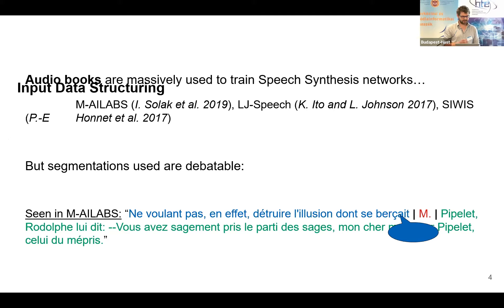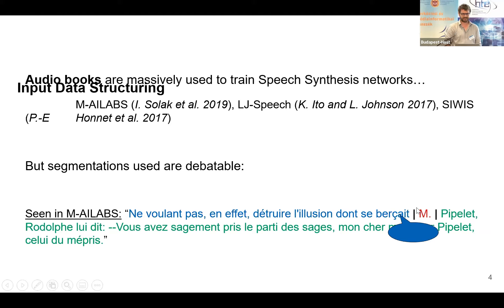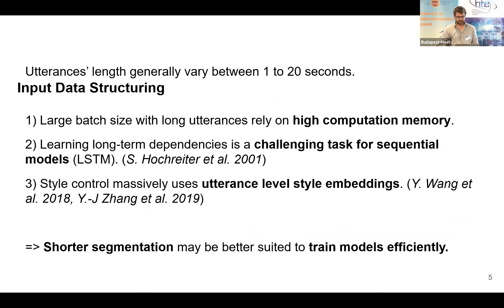None of these boundaries match an actual silence in the speech. Another issue with these corpora is the duration of utterances — long utterances may not be the best approach to train TTS models. There are three reasons: first, high computation memory and power is needed for large batch sizes with long utterances; second, TACOTRON2 uses recurrent units like LSTM in its encoder, which have trouble learning long-term dependencies; third, style control via intonation uses utterance-level style embeddings, meaning shorter utterances enable finer control at inference time.